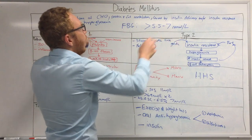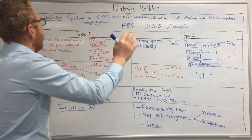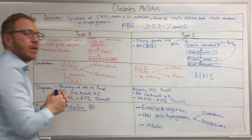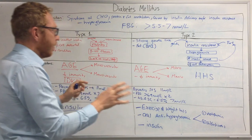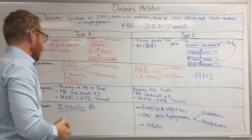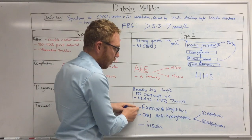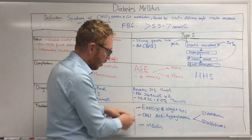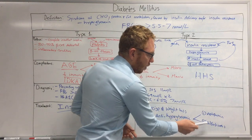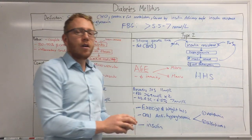To summarise: both type 1 and type 2 diabetes mellitus involve hyperglycemia but differ in cause and treatment. Complications are similar due to hyperglycemia — DKA is specific to type 1, HHS more to type 2. Diagnosis is the same for both. Type 1 requires insulin; type 2 is managed first with exercise, weight loss, and diet, then oral anti-hyperglycemics like metformin and sulfonylureas, and finally insulin if needed.